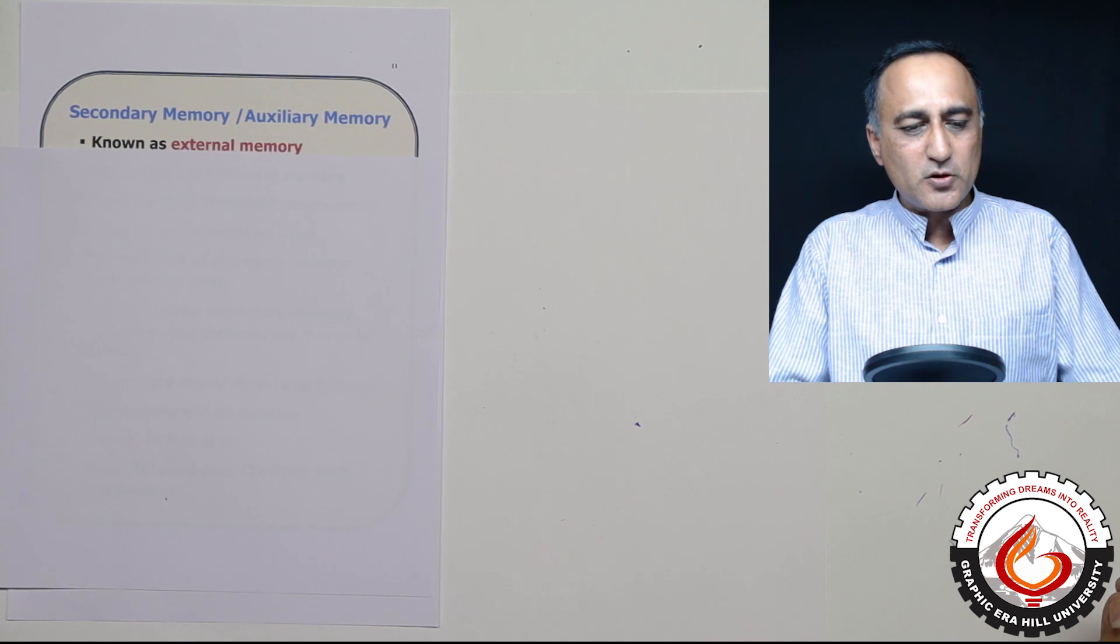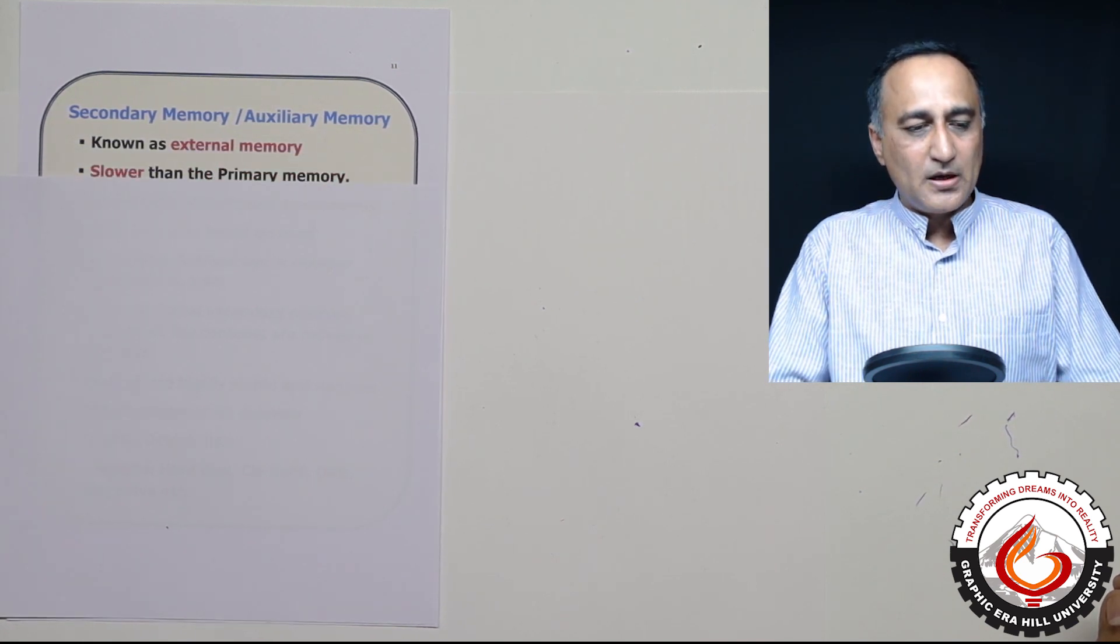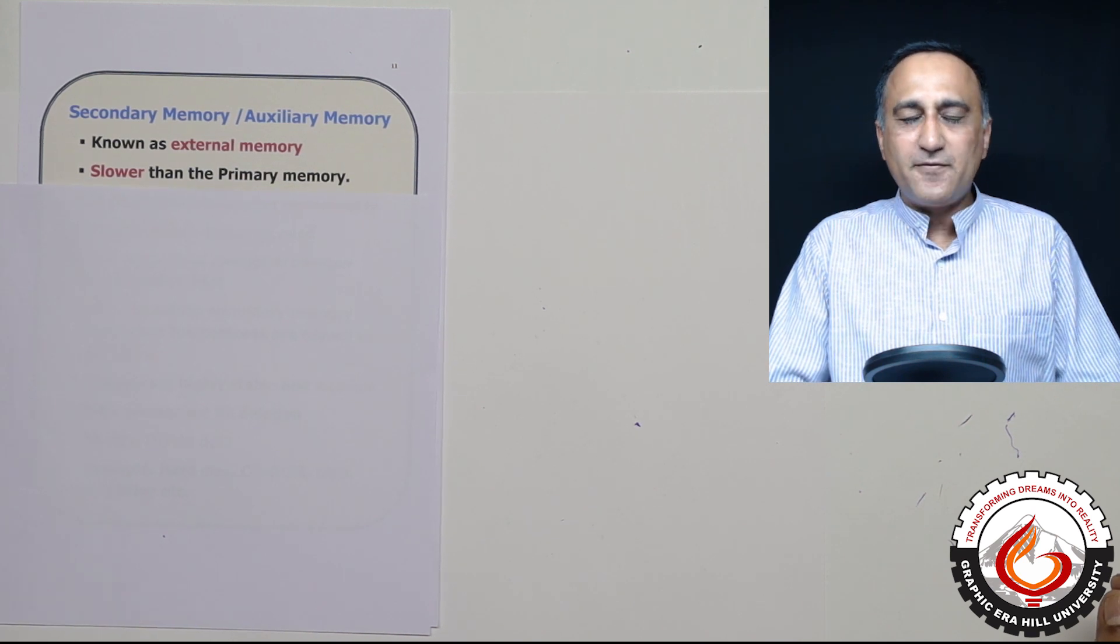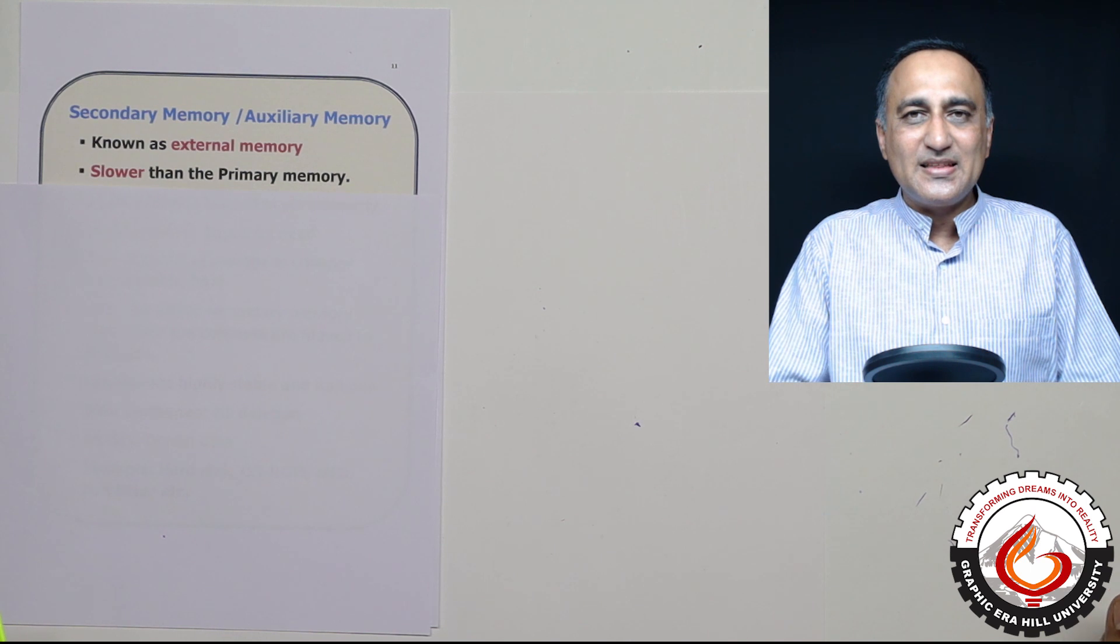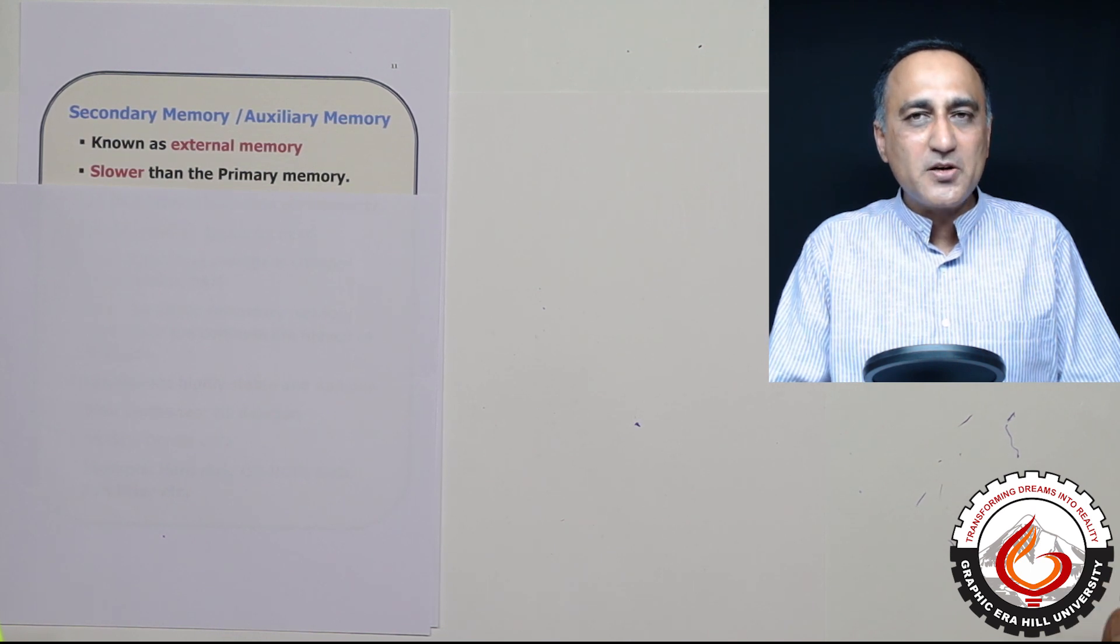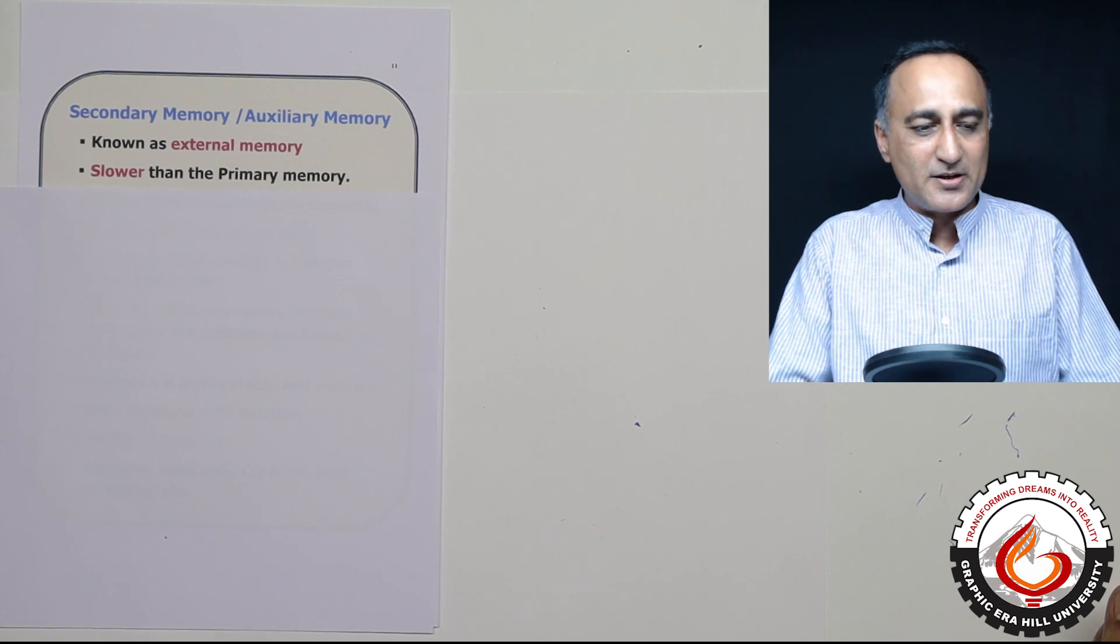The secondary memory is also known as auxiliary memory or external memory. One thing which differentiates primary memory from secondary memory is that secondary memory is much slower than primary memory by a factor of hundreds of times.